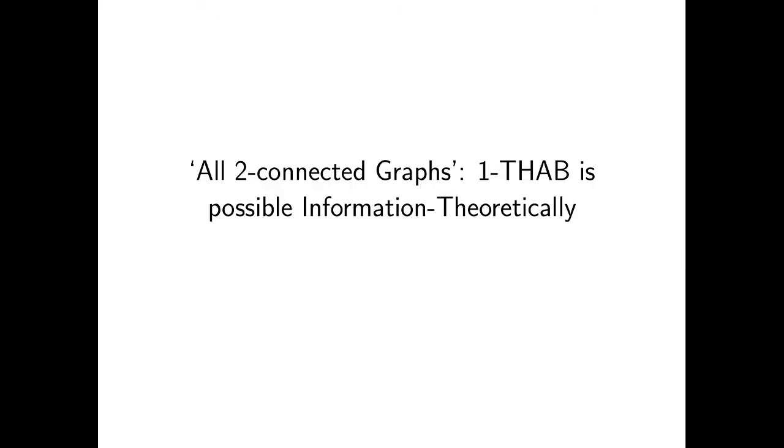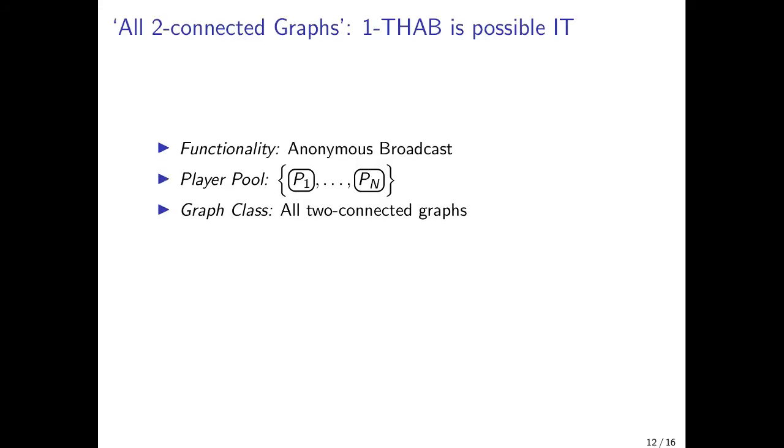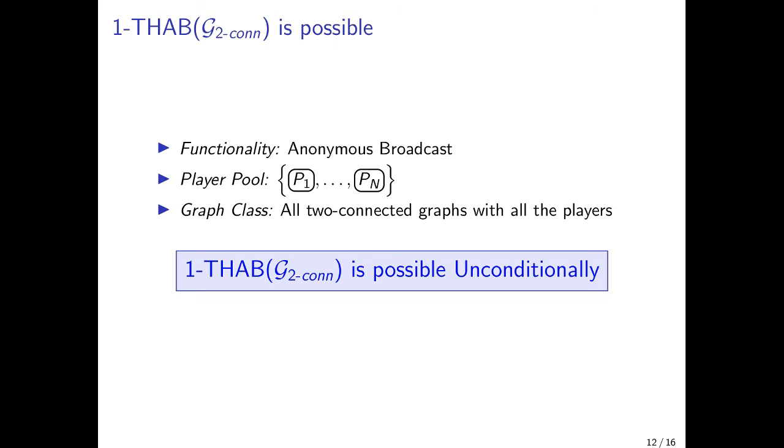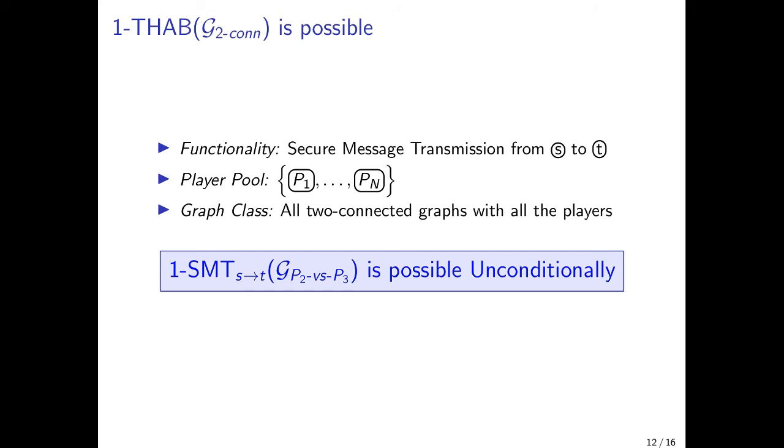Let's now show our second result, that topology-hiding anonymous broadcast against one passive corruption is possible information theoretically. So this is our setting, but for simplicity I'll restrict the graph class to only those graphs with exactly n vertices, that's all the players. And instead of showing you how to achieve anonymous broadcast, I'll instead show how any two players, here S and T, can emulate a secure channel between them. So this is in fact sufficient in this case to achieve anonymous broadcast, but I won't show it, just trust me. What are the requirements for this functionality? S wants to send a message securely to T, meaning T should get the message, none of the other players should learn it, and we still want to hide the topology.